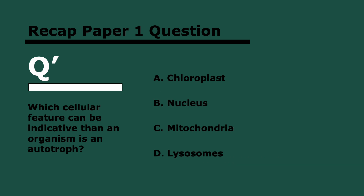And finally: which cellular feature can be indicative that an organism is an autotroph? The answer is the chloroplast — if you have chloroplasts, you can do photosynthesis, so you can create your own food. The rest of the options are shared by most or all eukaryotic cells and are not indicative of being able to produce your own food. I know this topic is a bit all over the place, so if you have any questions, leave them in the comments. Until then, I'll see you next week — best of luck.